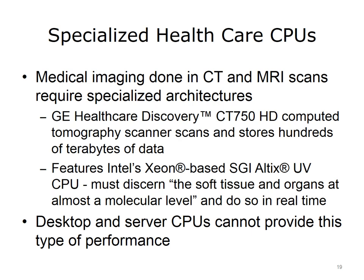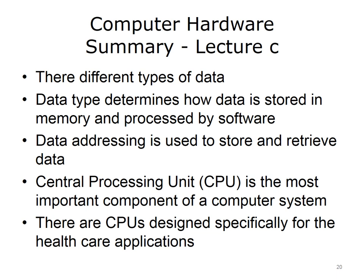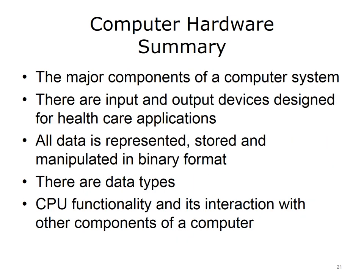This concludes Lecture C of Computer Hardware. In summary, this lecture discussed different types of data, their representation, storage, and addressing within a computer; how data type determines the way in which data is stored in memory and processed by software; data addressing, which is used to store and retrieve data; the central processing unit, or CPU, and its functionality; and CPUs designed specifically for healthcare applications. This also concludes the unit Computer Hardware. In summary, this unit covered major components of a computer system, CPUs and input and output devices designed specifically for healthcare applications, how data is represented, stored, and manipulated in binary format, data types, data representation and addressing, and CPU functionality and its interaction with other components of a computer.